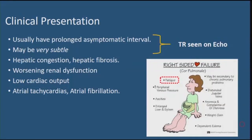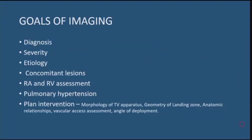Tricuspid regurgitation tends to have a prolonged asymptomatic interval. Even when there are symptoms, they tend to be subtle. At this point, TR is predominantly an imaging diagnosis made on echocardiogram. By the time end-organ damage is seen — associated with right-sided heart failure — those symptoms suggest the disease is actually advanced. The goals of imaging with echocardiogram or cross-sectional imaging are to make a diagnosis, assess severity, identify the etiology, evaluate concomitant lesions for treatment planning, look for right-sided chamber remodeling, assess for pulmonary hypertension, and plan interventions.